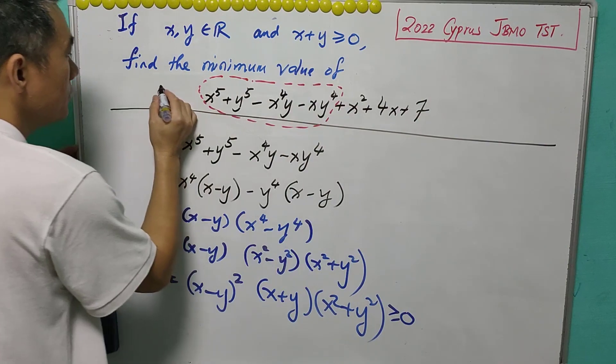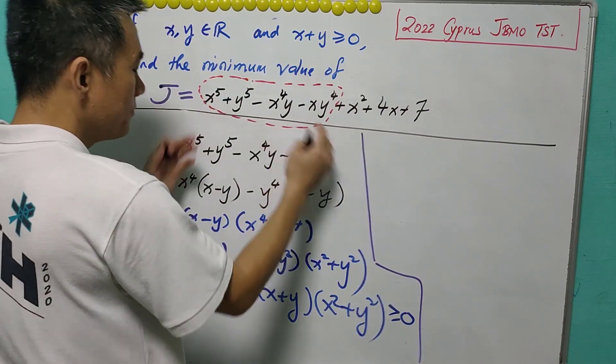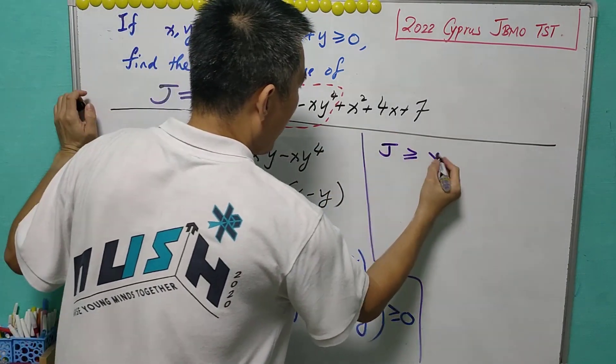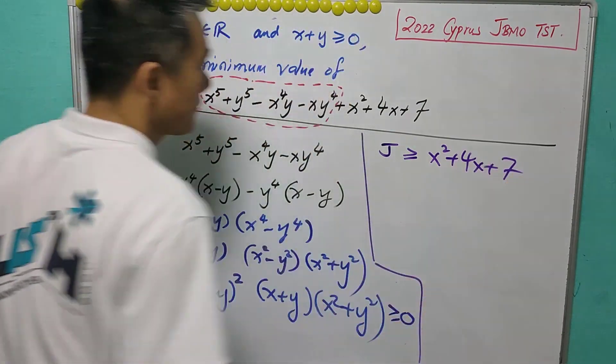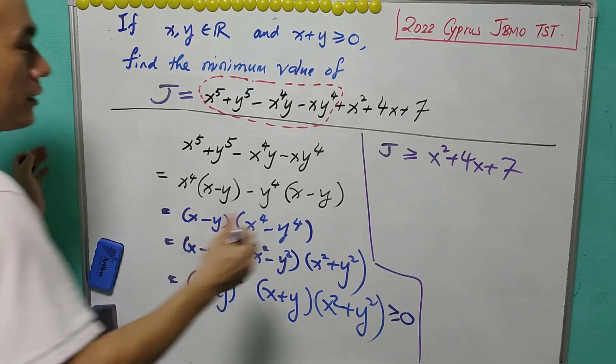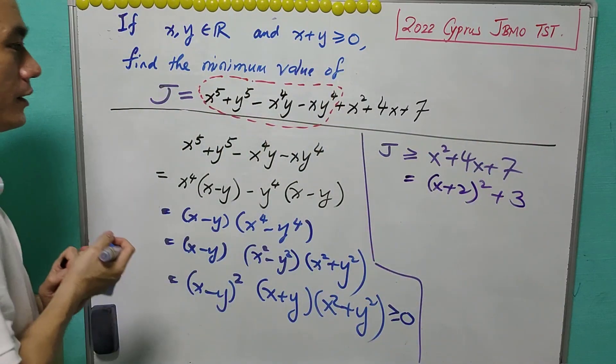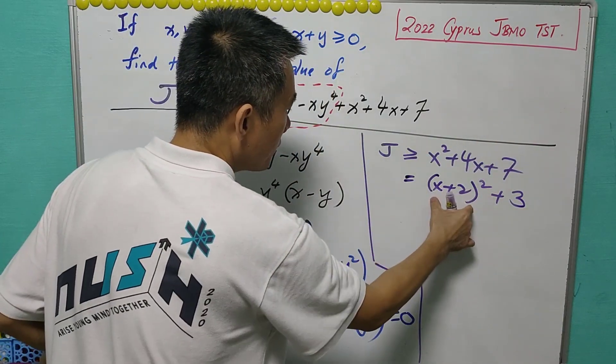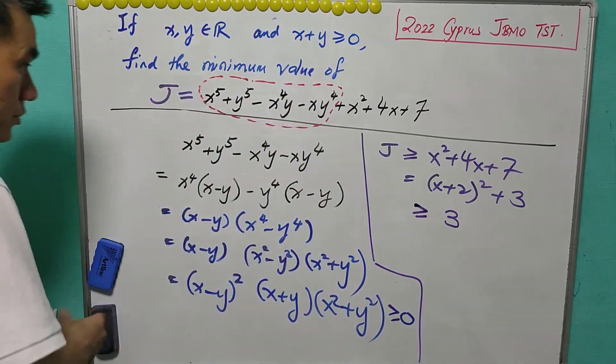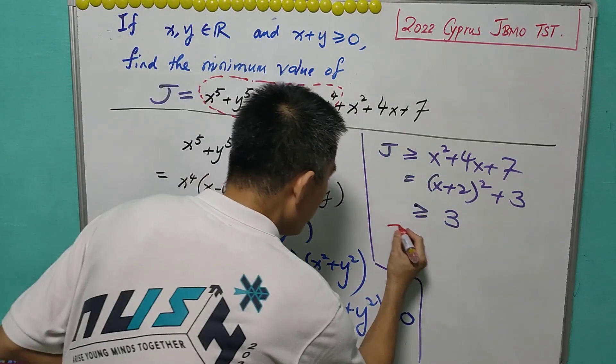Now we let this expression to be J. So what we know right now is the first four terms at least zero. So J must be at least x square plus 4x plus seven. This is just a quadratic expression. By completing the square, we can have x plus two square plus three. And again, this is a square of real numbers. It is at least zero. So this is greater than or equals to three. So what we have here is J is at least equals to three. The equality holds,